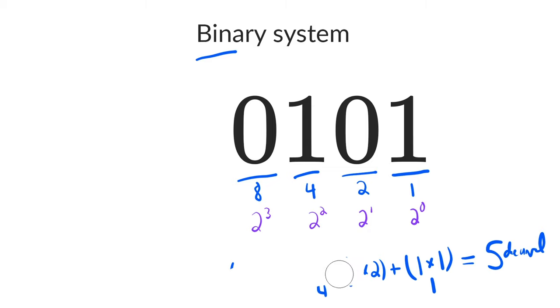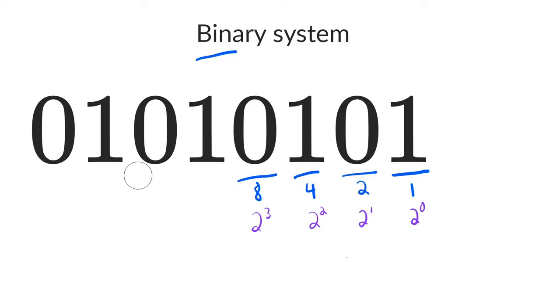Let's try converting a bigger binary number to decimal. We know that this equals 5, what happens if we add 4 more digits to the left of these 4 digits? Let's start by figuring out what each place represents.